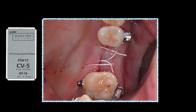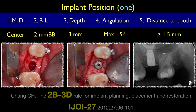I prefer to use a mattress suture. I always use this checklist diagram: mesial-distal position — right in the middle; buccal bone thickness — 2 mm buccal bone; depth from the fixture — 3 mm below the crest; angulation — less than 15 degrees; and distance to the natural tooth — over 1.5 mm. That is my routine. If you use this 2B3D rule table to check, most likely you'll get a good implant position. If you're interested, you can refer to the article '2B3D rule for implant planning, placement, and restoration' published at ICI-OI three years ago.